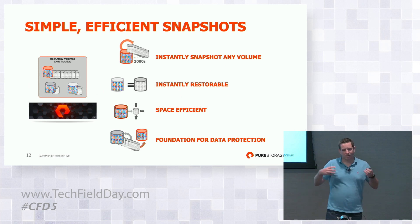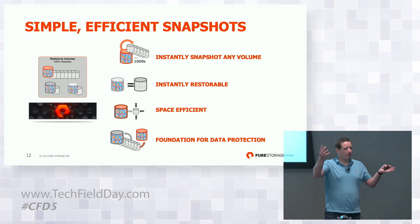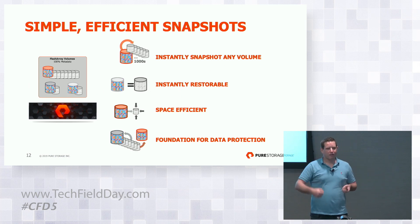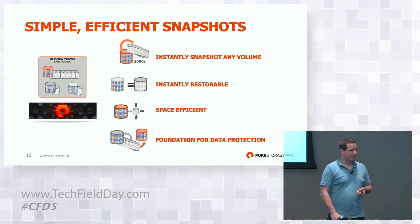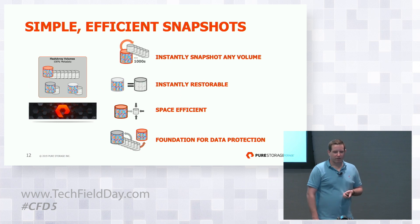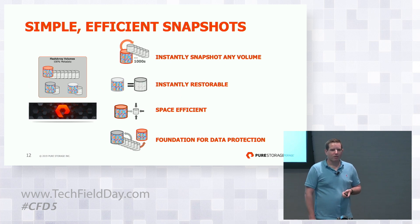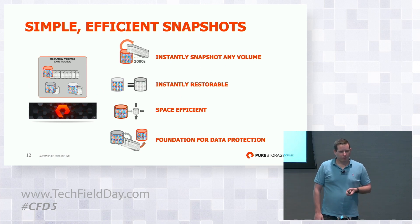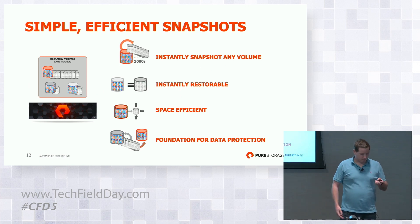One thing that our snapshotting system allows us is that when you have two different snapshots in our array, we can very quickly calculate any differences between the snapshots and see where bytes have changed in between. This is a feature we are using for CloudSnap.